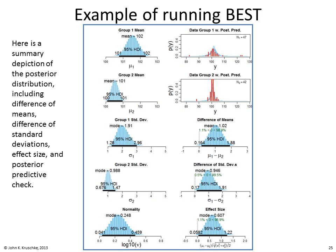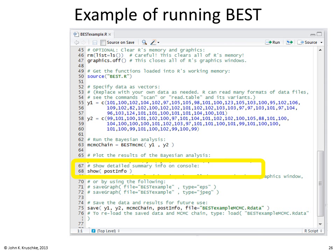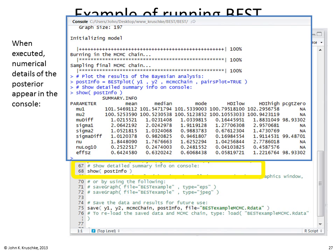However, the graphic only displays the first three digits of the numerical results, and you may want more detailed summary information, which is obtained from the next lines in the script. When you run that line, the console displays information about each parameter in great detail — in fact, perhaps more digits than are actually meaningful. It is up to you the user to decide how many of these digits are meaningful in the context of your work.